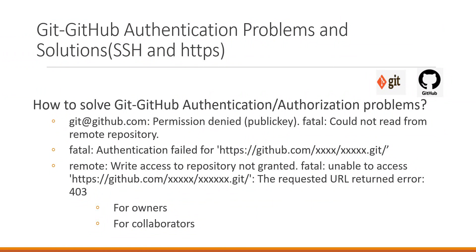Sometimes the same problem occurs when we regenerate the keys in the client machine — we also need to add the corresponding public key in the GitHub server. To solve the same issue, we need to replace the existing public key in the GitHub server. Now let us try to access the GitHub server via HTTPS protocol and see what problems can occur and how to solve them.